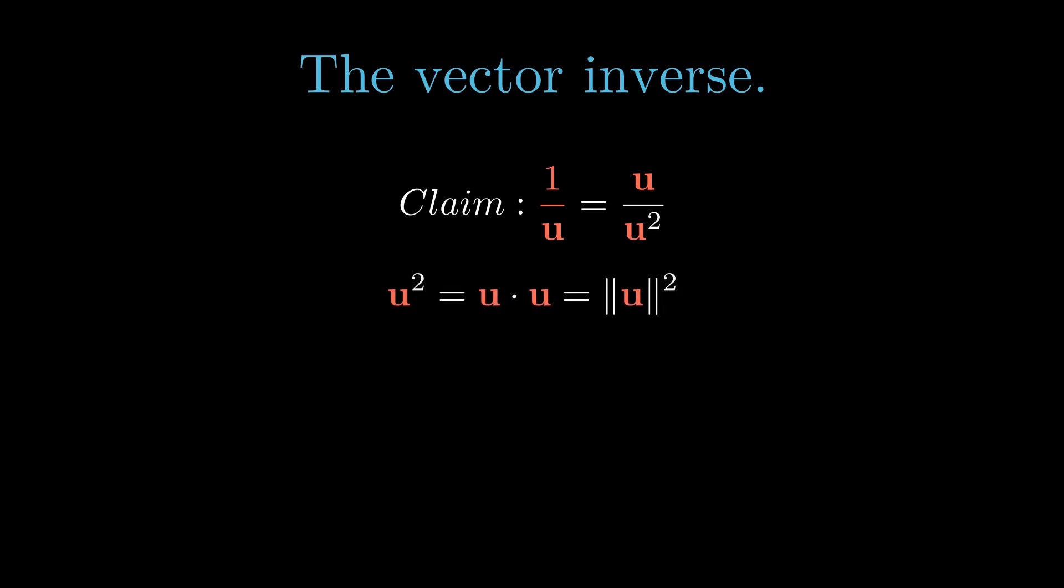In geometric algebra, it's always true that u squared is u dotted with u. In Euclidean spaces, that's also the length squared. So if we compute the vector inverse of u divided by u squared, which is u divided by the length of u squared, which is u hat divided by the length of u. We see that the vector inverse is always proportional to the vector itself.